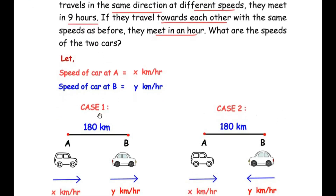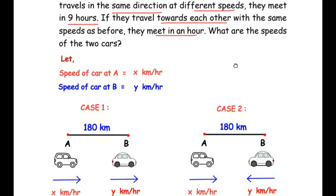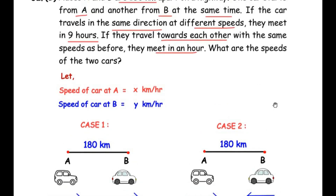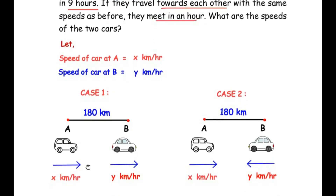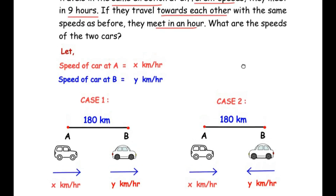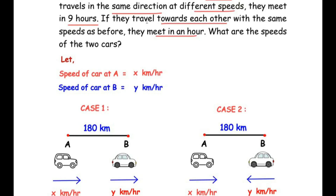In Case 1, places A and B are marked and they are 180 kilometers apart. The cars travel in the same direction but at different speeds — both moving in the same direction with speed x and speed y respectively. It is mentioned that if they travel in the same direction, they meet in 9 hours.